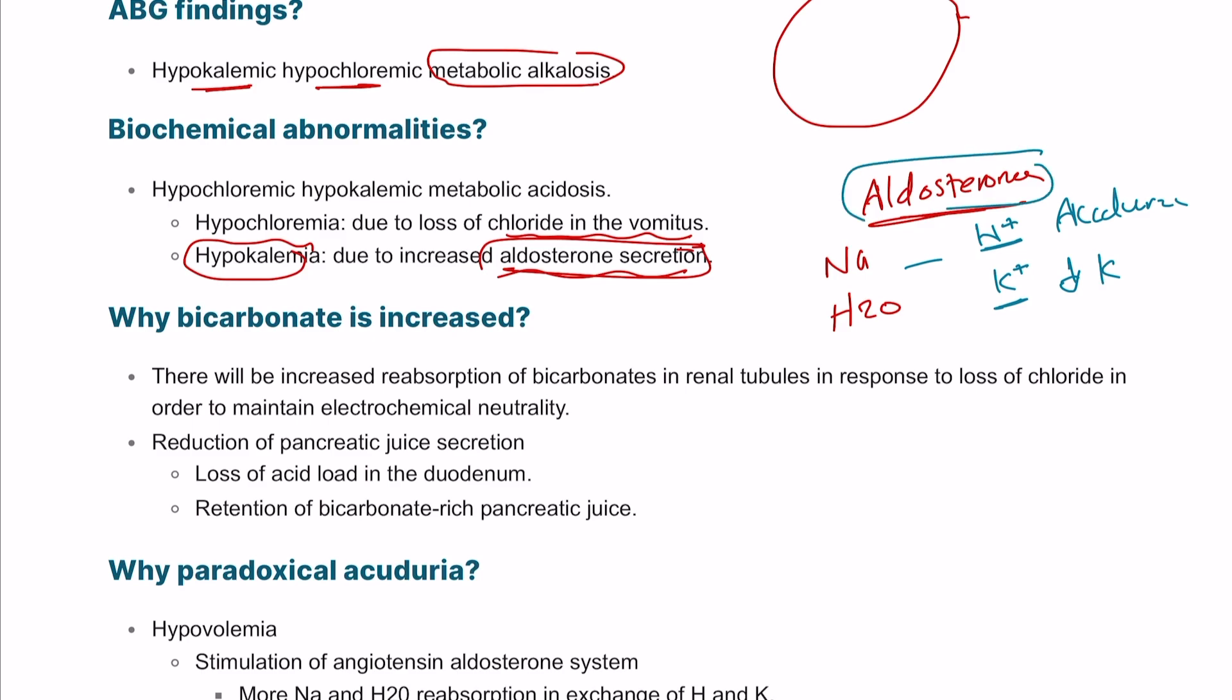This is the basic physiology: aldosterone production occurs in case of hypotension such as vomiting or dehydration, leading to salt and water retention in exchange with hydrogen and potassium. Bicarbonate will be increased because there will be increased reabsorption in the renal tubules in response to loss of chloride. This happens in the thick ascending part of loop of Henle with reabsorption of sodium bicarbonate in exchange with chloride and potassium.